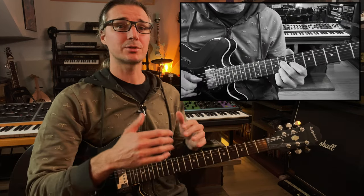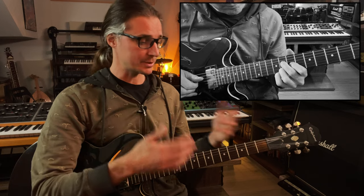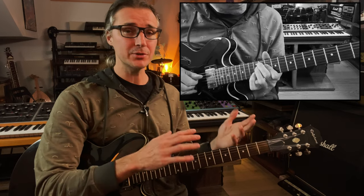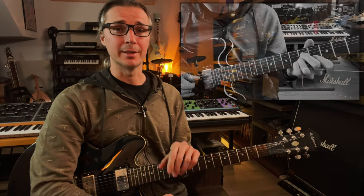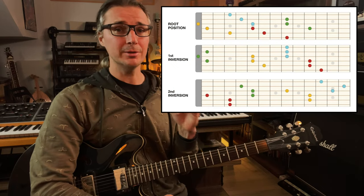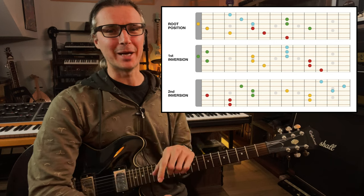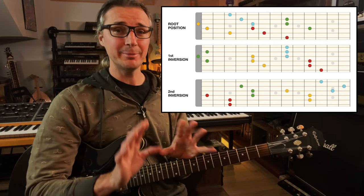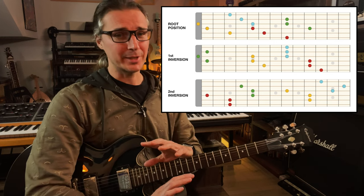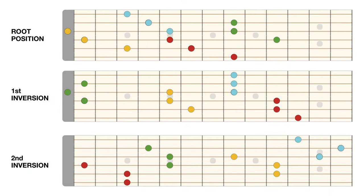Step two is to just play around with the minor triads. You don't have to memorize them right now — just try to play them across the fretboard. See which ones come easy to you, which ones don't, which ones you like the sound of. Here are all the triads in all groups of three strings in all inversions for C minor. Don't be intimidated by the numbers — it's actually a lot easier than it looks.